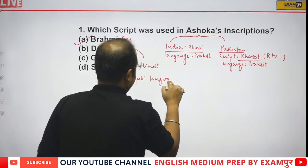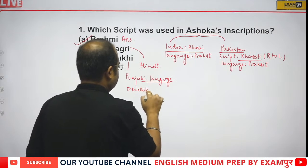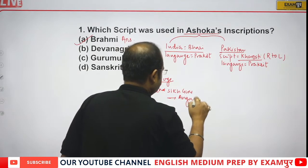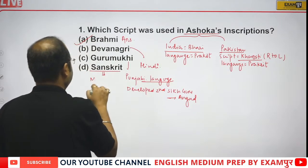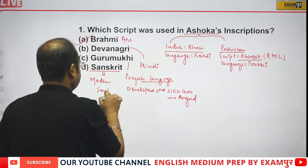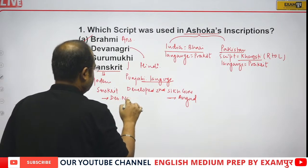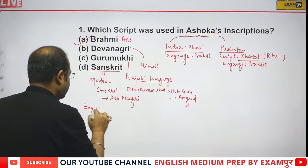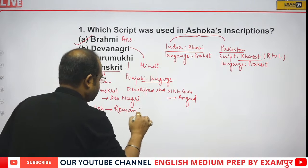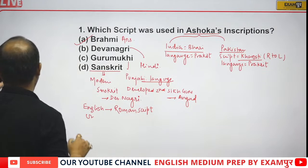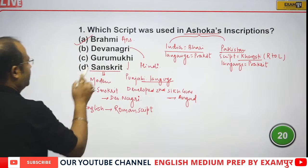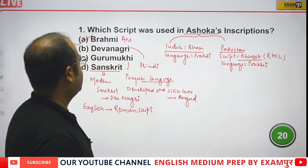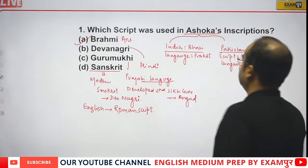Gurmukhi script was developed by the second Sikh Guru, that is Guru Angad Dev. Modern Sanskrit is written in Devanagari. English is written in Roman script, while Urdu and Arabic are written in Arabic script. So the correct answer is option A — Brahmi — and the language of Ashoka was Prakrit. Ashoka was the first king of ancient India to communicate with people through inscriptions.